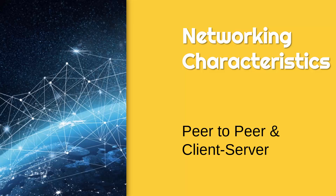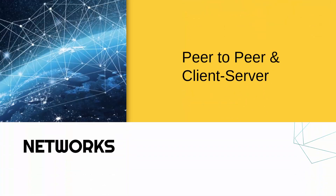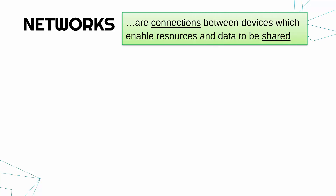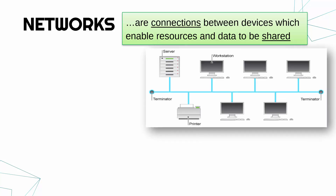We're going to start this chunk of videos looking at networking by talking about the difference between a peer-to-peer and a client-server network. Before we do, let's define what a network is. A network consists of the connections between devices which enable resources and data to be shared. Here's a picture of a very simple network, what we might call a bus network.